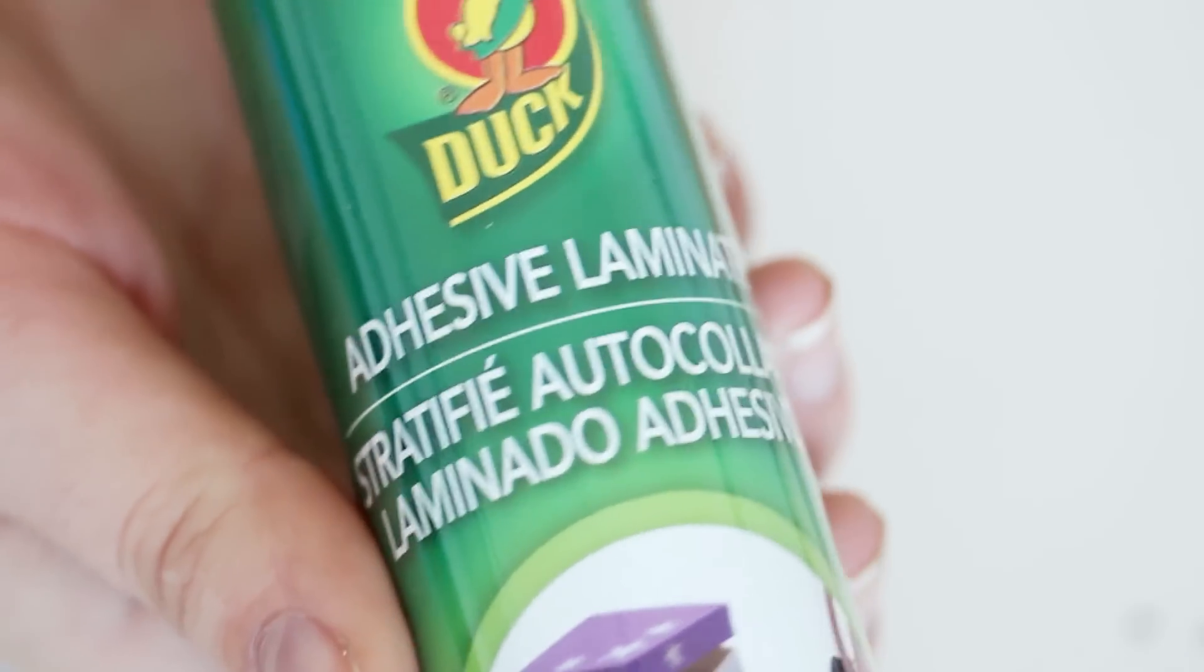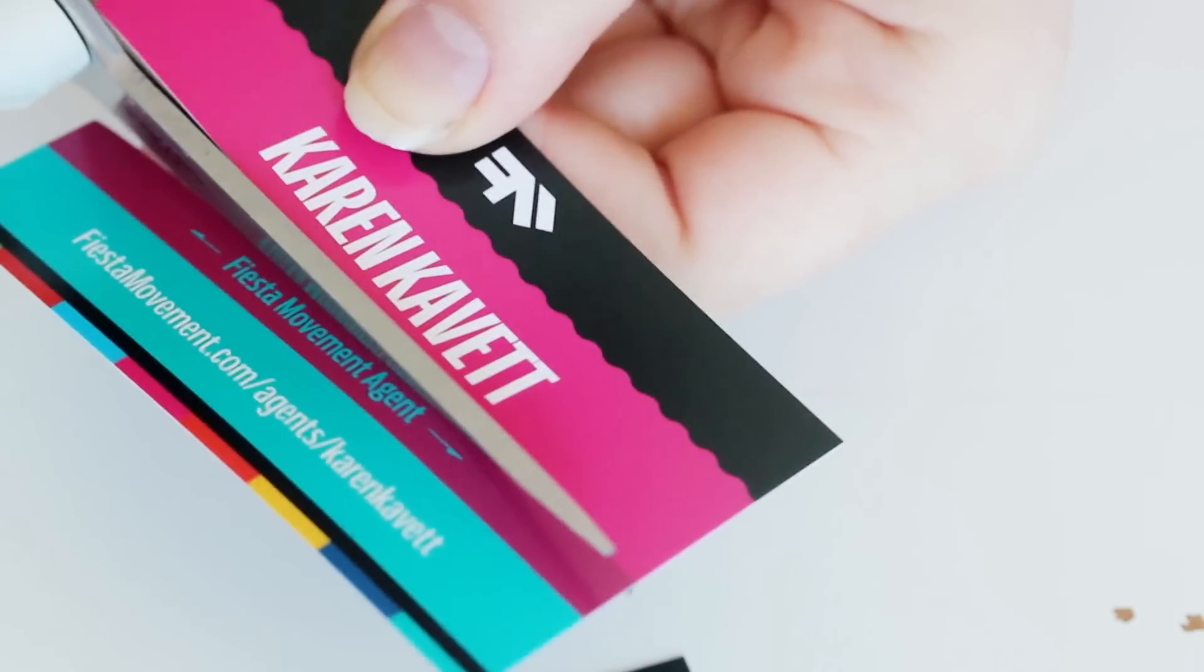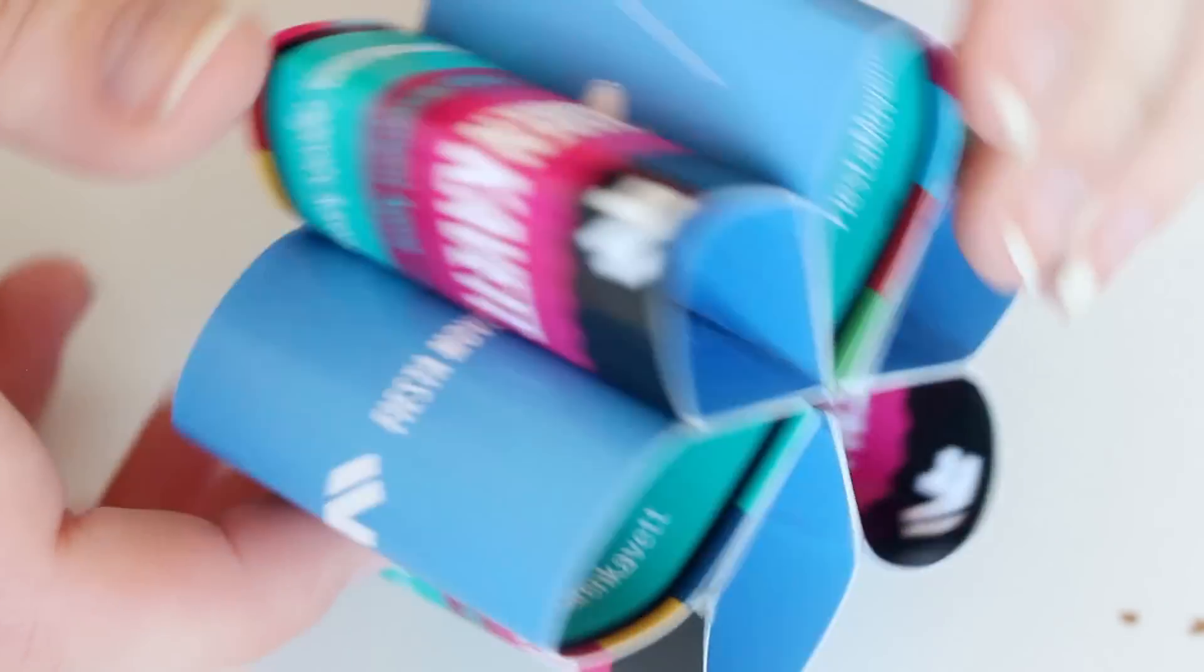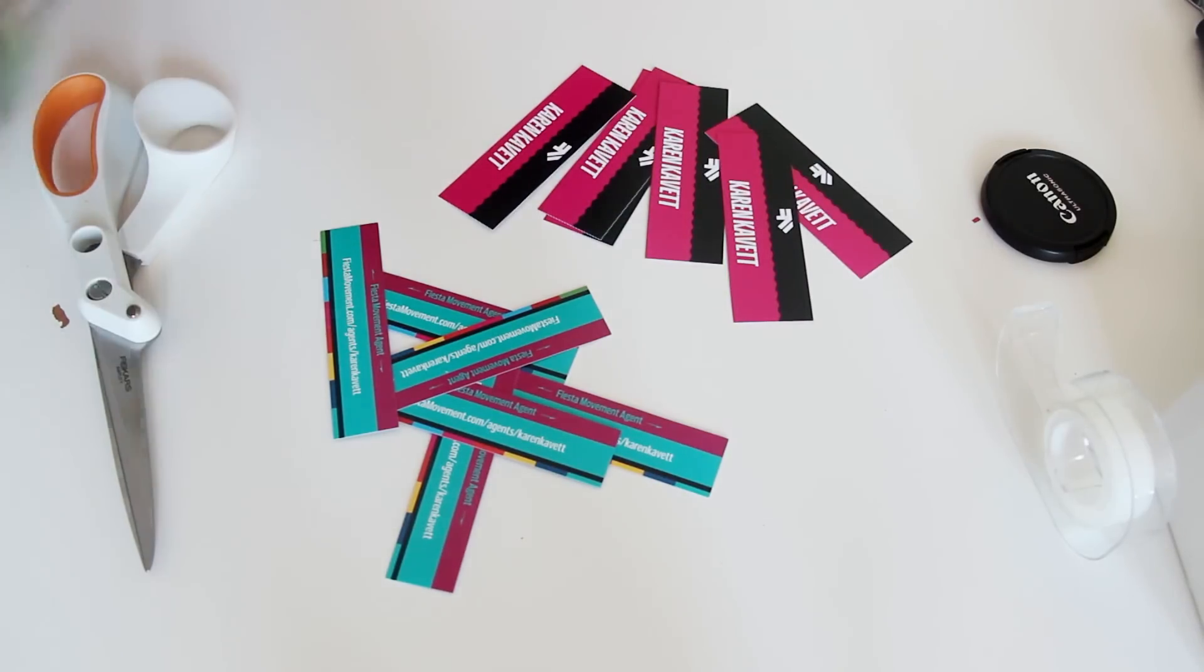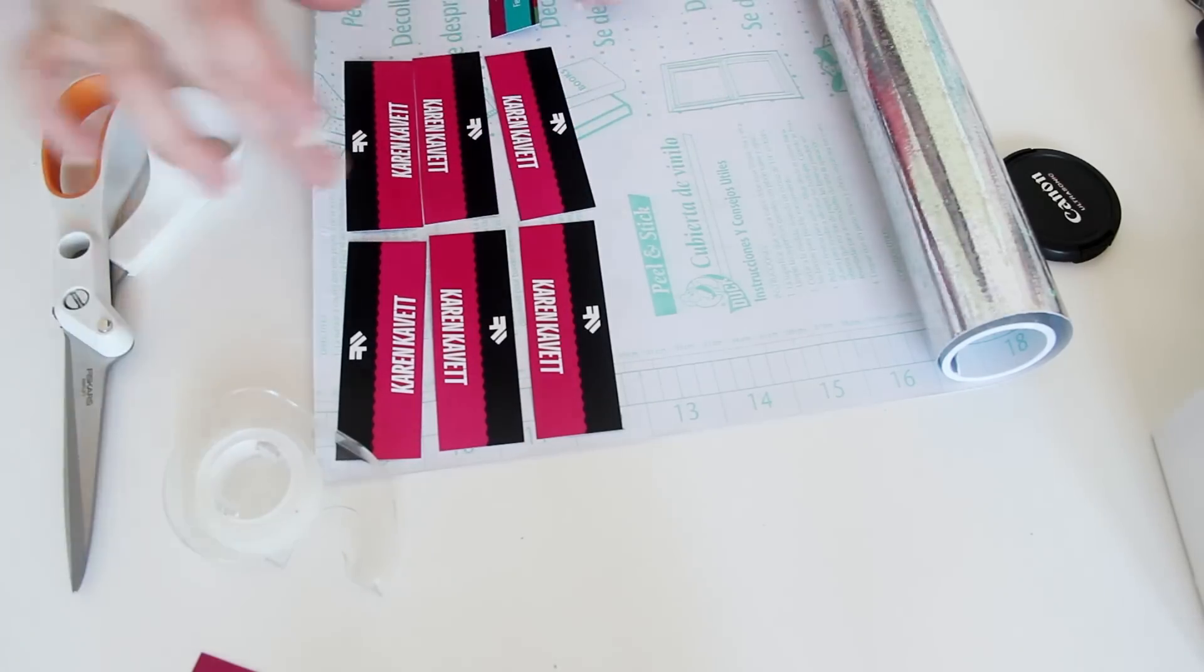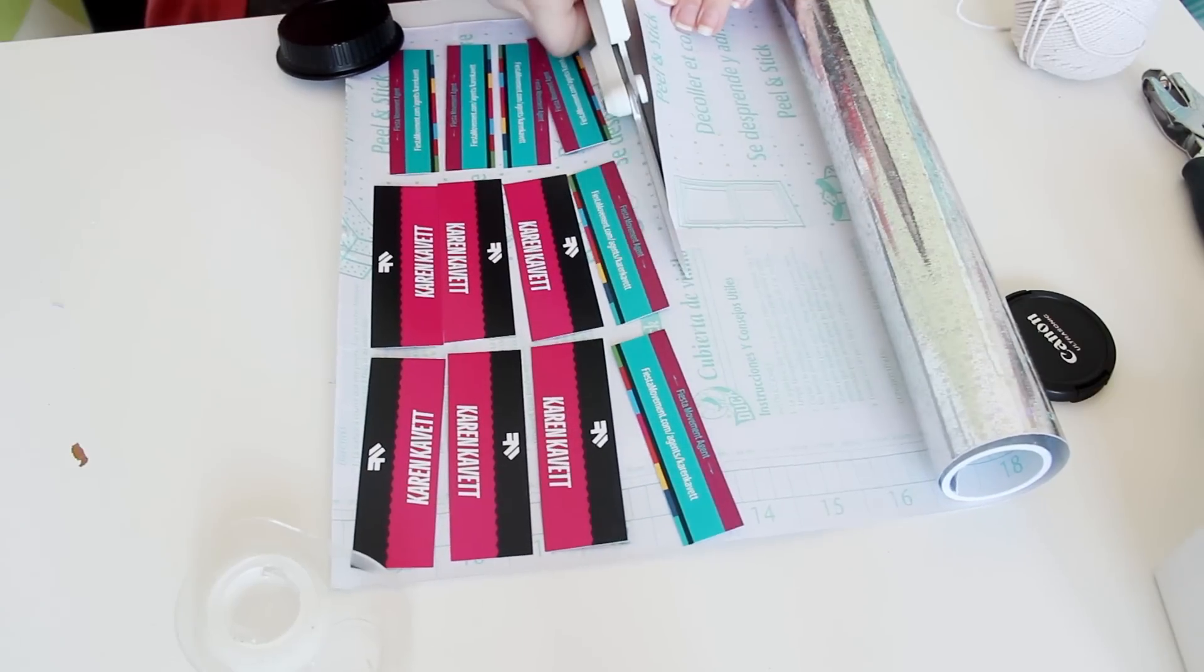So I'm going to cover up the cards in this Duck Brand adhesive laminate in a sparkly silver color. However, before I cover the cards, I'm just going to cut them in half, since the original flower was a bit too thick for my liking. You're going to need six business cards for each flower, so once you have six pieces that are all the same width, you can grab your laminate and start rolling it out. Lay down the business card pieces so that you can see how much of the laminate you're going to need, and then cut off the piece you've just measured.